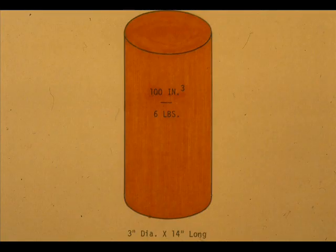Let's consider another example. We shall take a three-inch diameter by 14-inch long hollow stainless steel object that weighs six pounds and has a volume of approximately 100 cubic inches and calculate its specific gravity.